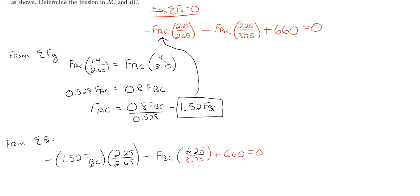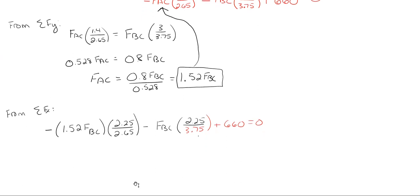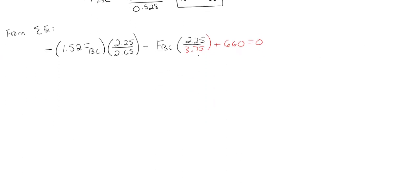With this equation, the only thing I have here is FBC. Everything else is in terms of FBC. So I can actually solve for this. Just going to have to do a little bit of math here to get all these variables and everything solved down to easier numbers to use. 1.52 times the ratio of 2.25 over 2.65 gives me minus 1.29 FBC. And then 2.25 over 3.75 gives me 0.6 FBC. And then plus 660 equal to zero.